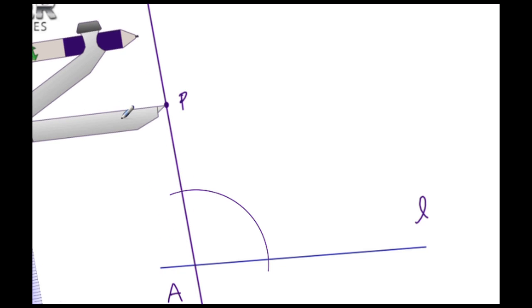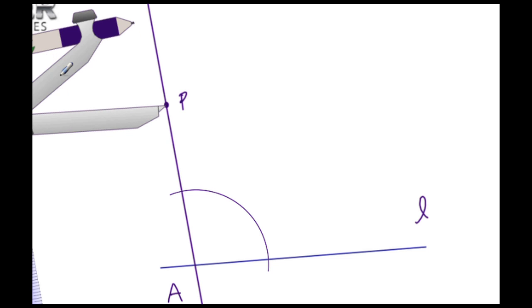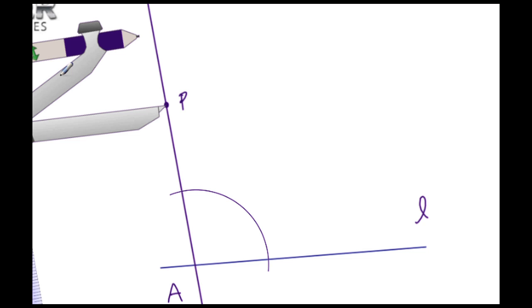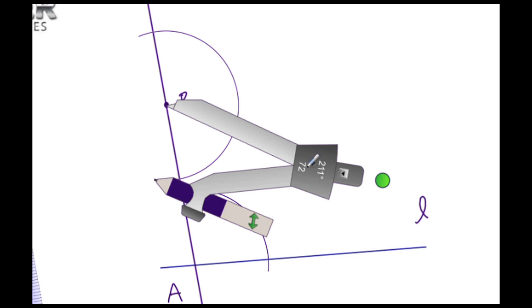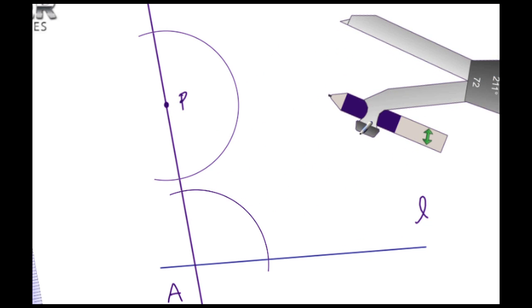Without changing the radius, let's move the compass up to point P and do the same thing - create an arc here. We want this arc to intersect our transversal in two different locations.